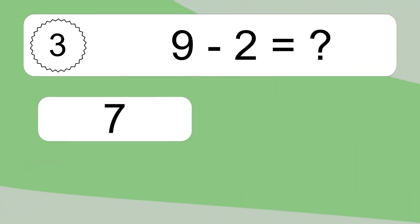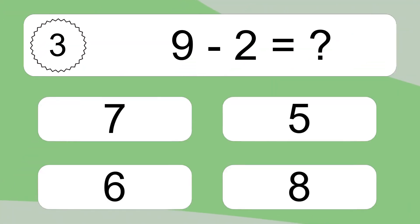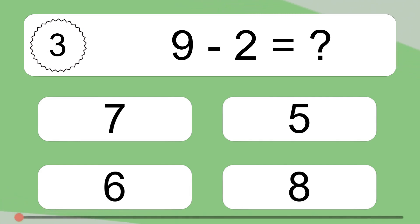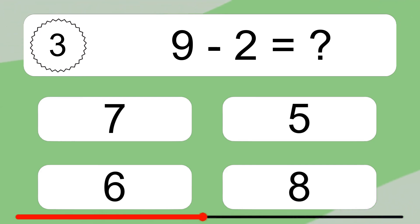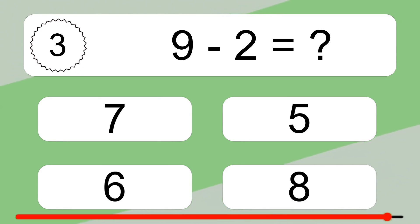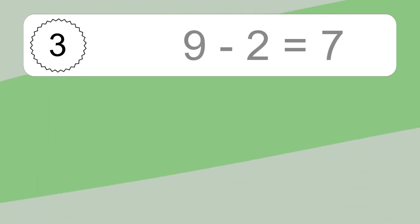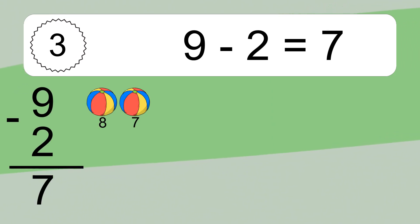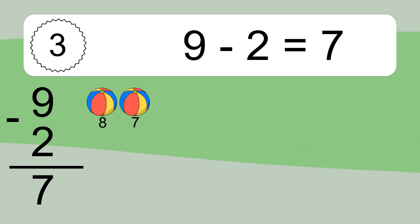9 minus 2 equals what? 9 minus 2 equals 7. Let's count it: 8, 7.